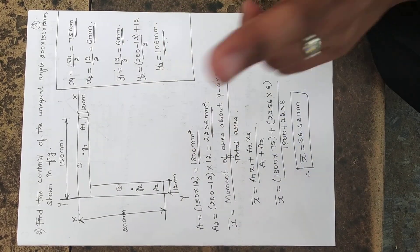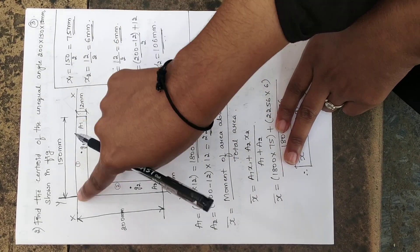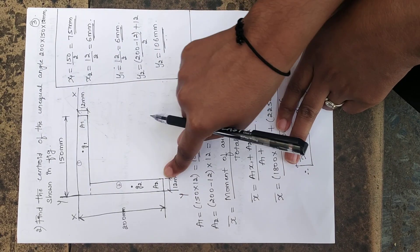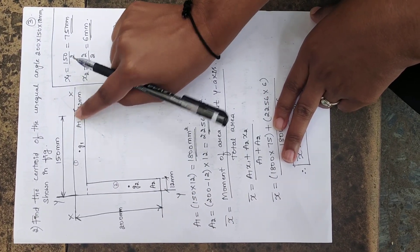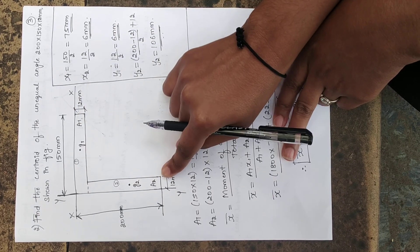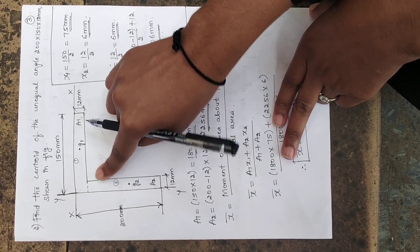This as portion 2. I am splitting the unequal angle into two parts. One as the horizontal portion, other as the vertical portion. Now, let us name A1 be the area of the first portion and A2 be the area of the second portion.